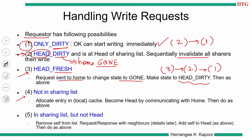Fourth case: the requester is not in the sharing list. We have to allocate an entry in the remote access cache for that block, then go to the home node. The home node will tell us about the head of the list. We attach this new requester to the head node and become the new head. Once the new head, you could be either head dirty or head fresh — so from case 4, you could be in state 3 or state 2, and accordingly take the action.